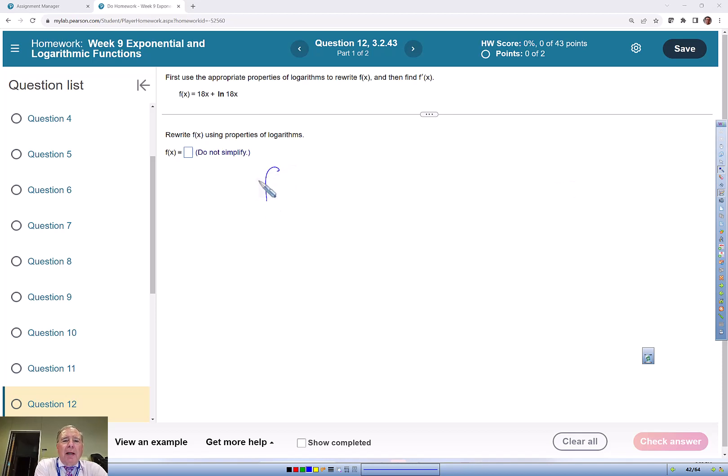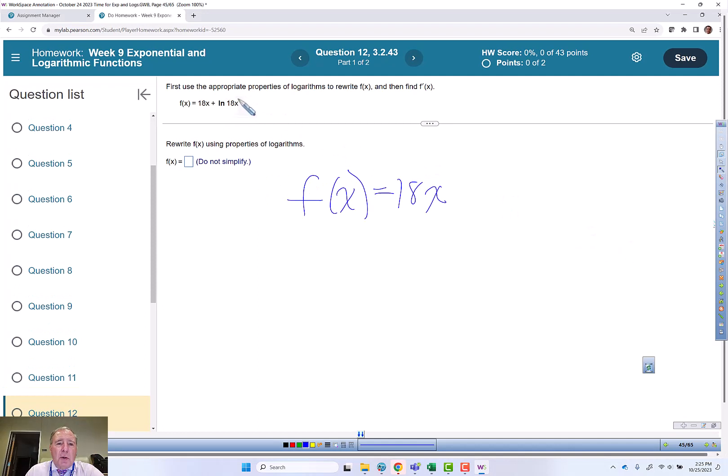So we're going to rewrite f of x equals natural log of 18x. Logarithms are exponents and they turn multiplication into addition. So natural log of 18x turns into the natural log of 18 plus the natural log of x.